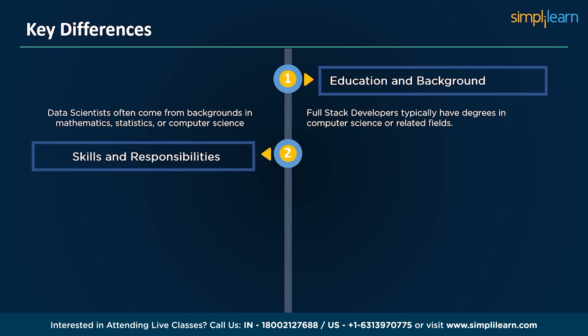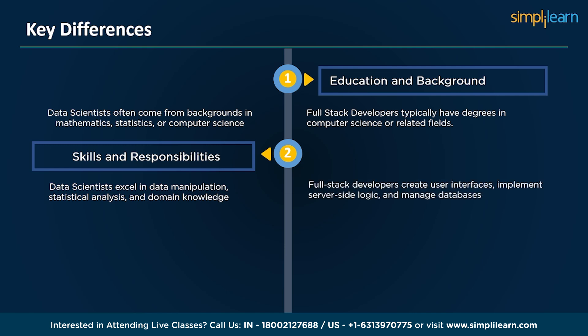Skills and responsibilities: data scientists excel in data manipulation, statistical analysis, and domain knowledge, and are experts at working with tools like Python, R, and data visualization tools to uncover valuable insights. Full stack developers, on the other hand, have a deep understanding of programming languages like Java, but primarily focus on web development — creating user interfaces, implementing server-side logic, managing databases, and working with frameworks like React or Angular.